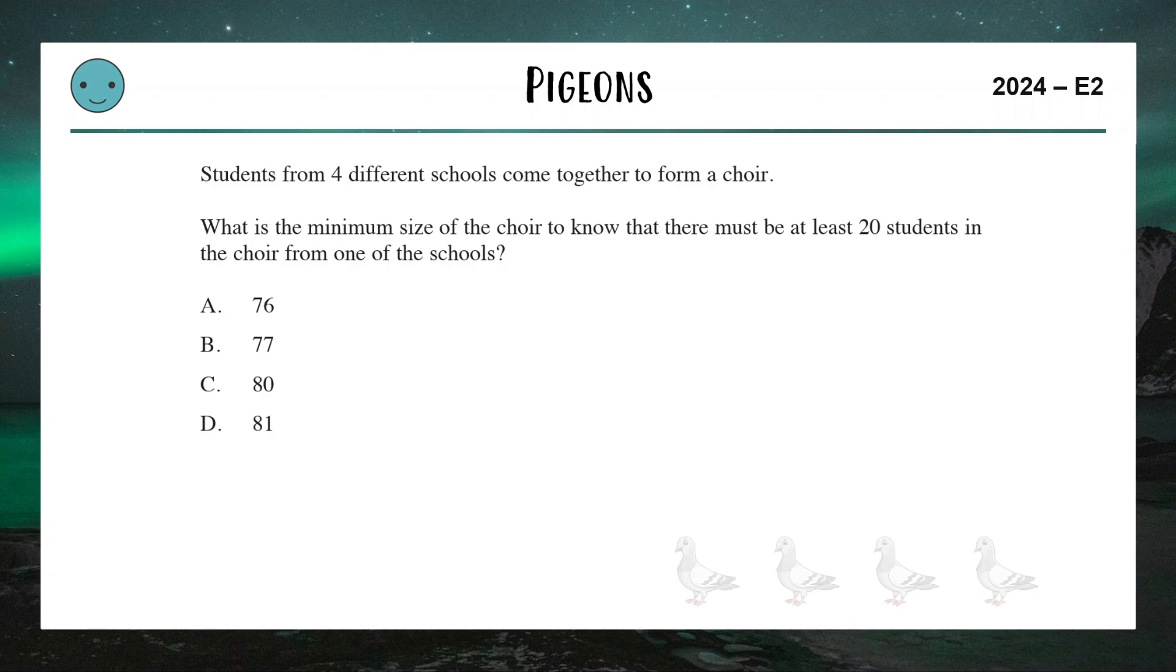In this example, our pigeons are going to be our four schools. The way I like to approach these is I'm trying to get 20 students from one of the four categories, which is one of the four schools. I'm just going to pretend that I'm getting really unlucky. So maybe if I got super unlucky, I ended up with 19 people from each of the four schools and I'm trying to get 20, which means now that I have four times 19 picked, which is 76 students.